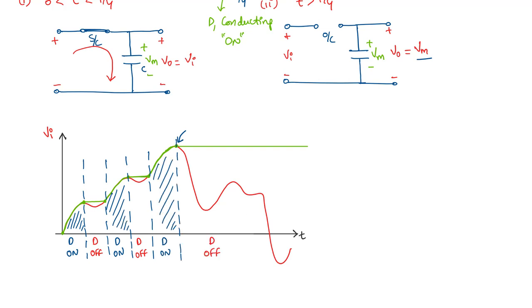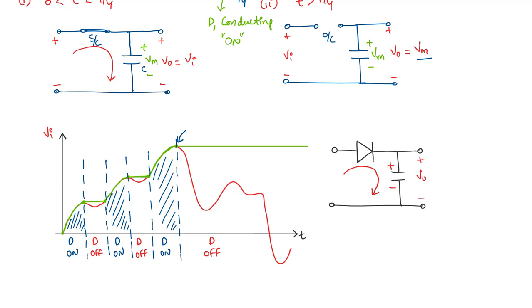This is a positive peak detector circuit. The diode has an arrow mark symbol indicating the direction current is allowed to flow when conducting. Current flows in that direction, so the voltage across the capacitor is such that the output voltage is positive — hence we call it a positive peak detector.